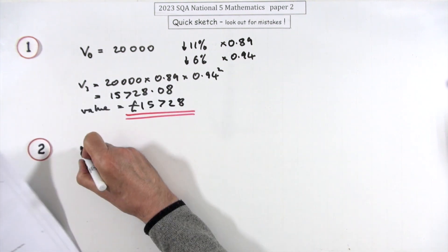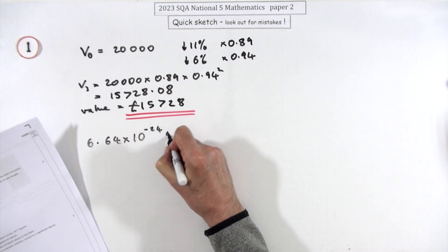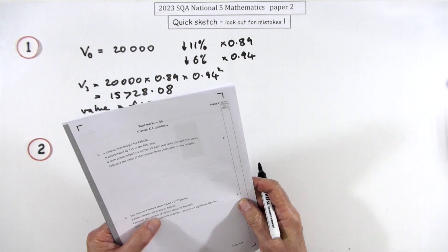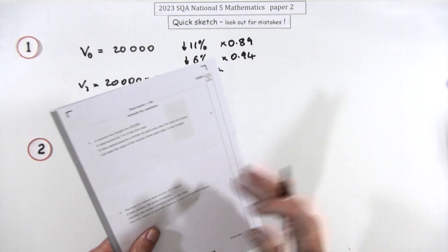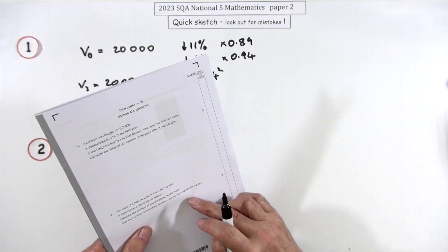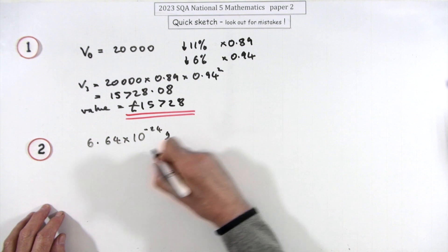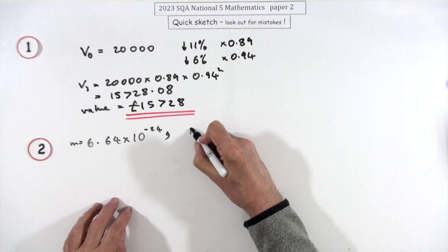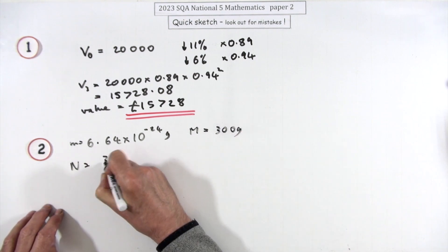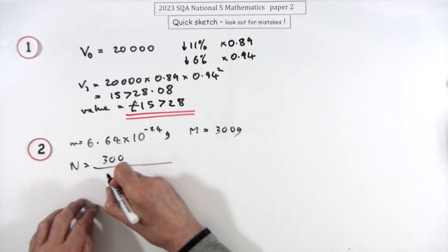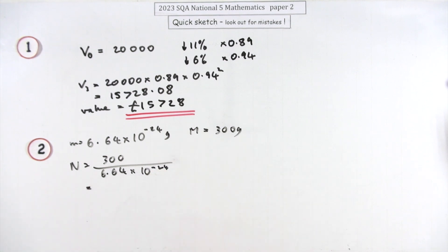Number two. Mass of a helium atom, 6.64 × 10⁻²⁴ grams. A flask has got 300 grams, so how many helium atoms is that? You want the answer in scientific notation and you can use your calculator, so you can just trust it to do it for you. Correct to three significant figures for three marks. Well, if that's the mass of one little atom and the mass of the whole lot is 300 grams, that means the number must be 300 divided by the mass of just one of them, which is 6.64 × 10⁻²⁴.